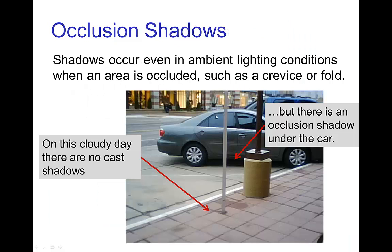Now, even when we have a bright day with lots of ambient light coming from the sky, we still have shadows that can occur due to occlusion.